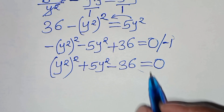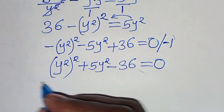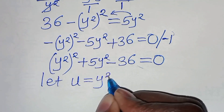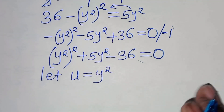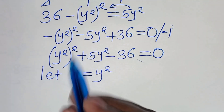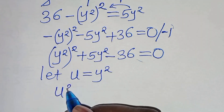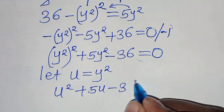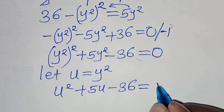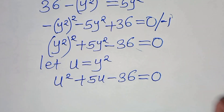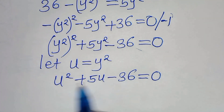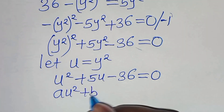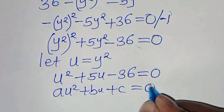We notice we have y squared and y squared here, so we can let u equal y squared. Substituting y squared with u, we have u squared plus 5u minus 36 equals 0. This is a quadratic equation of the form au squared plus bu plus c equals 0.